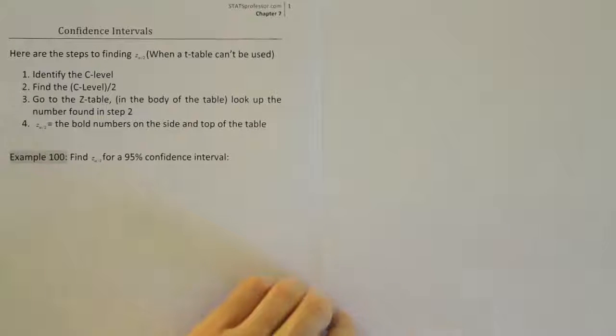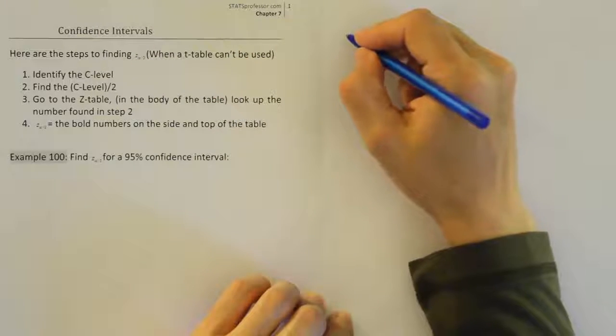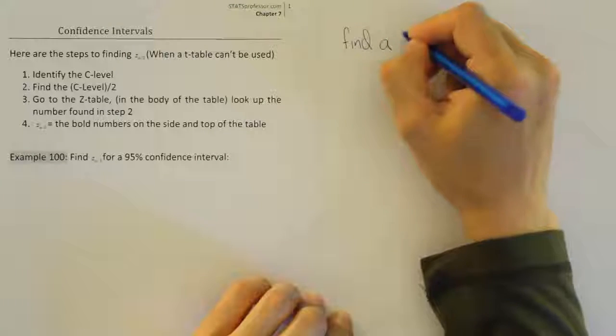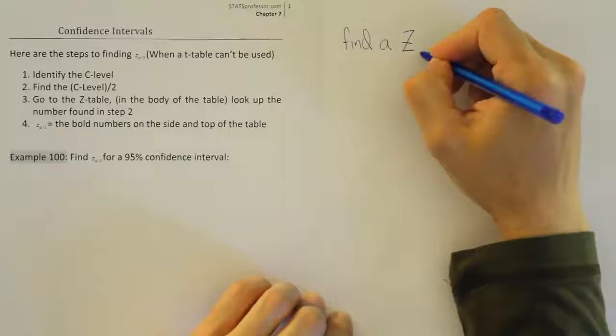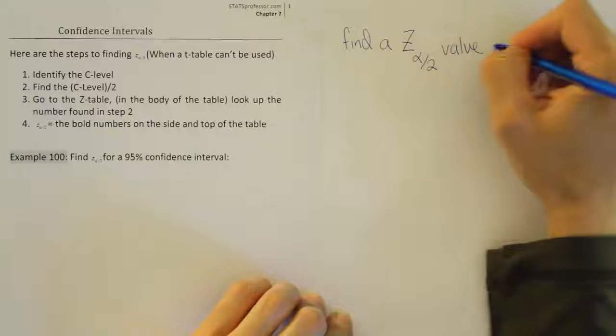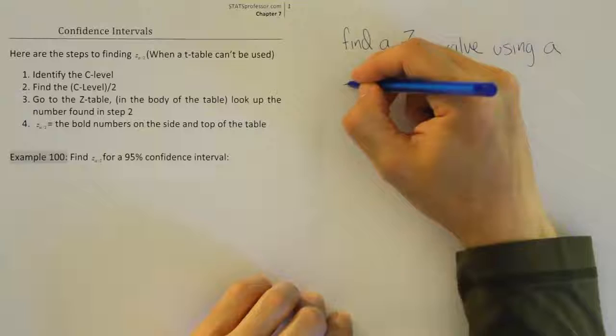In this problem we're using a z-table to find a critical z alpha divided by 2 value. So we're trying to find a z alpha divided by 2 value using a z-table.